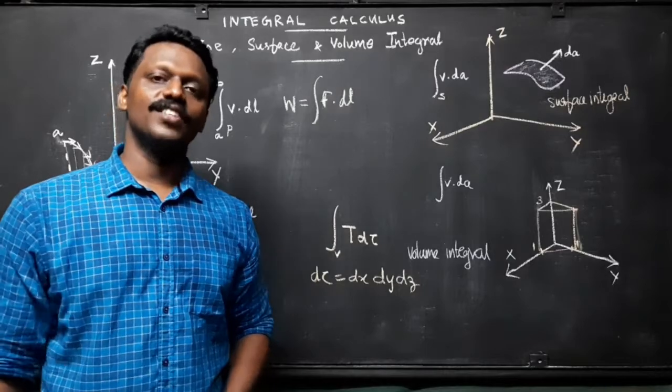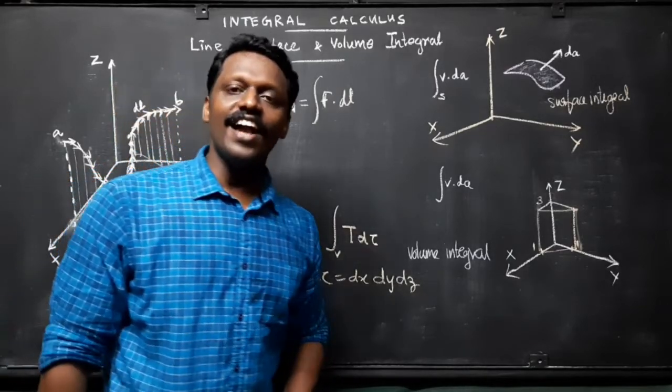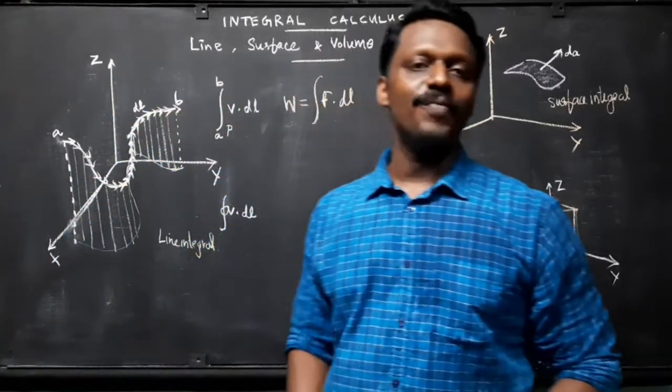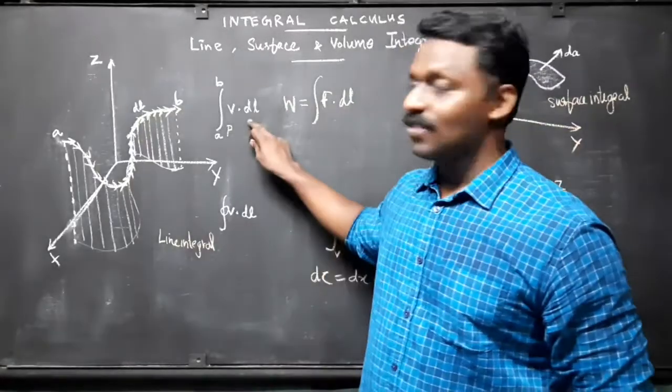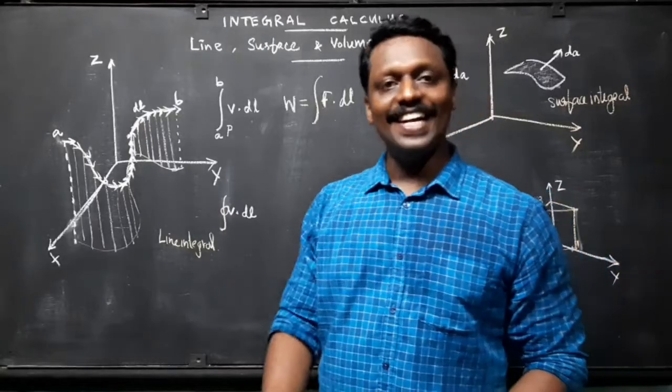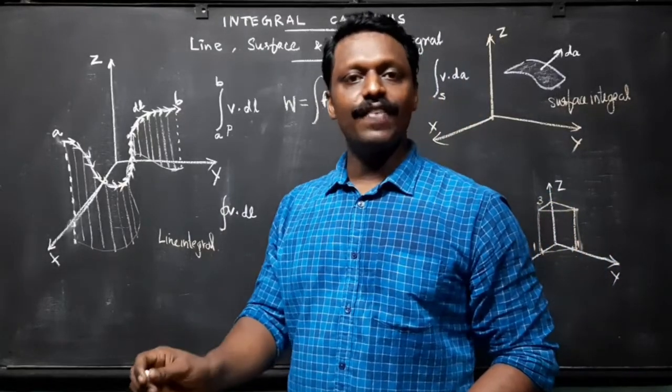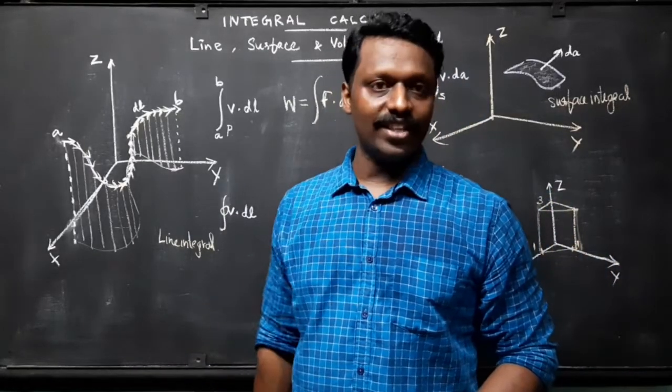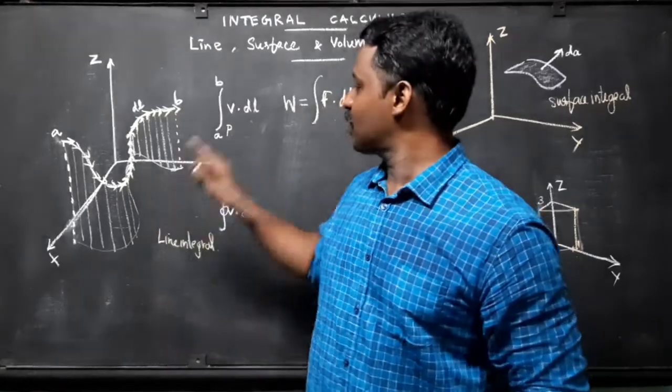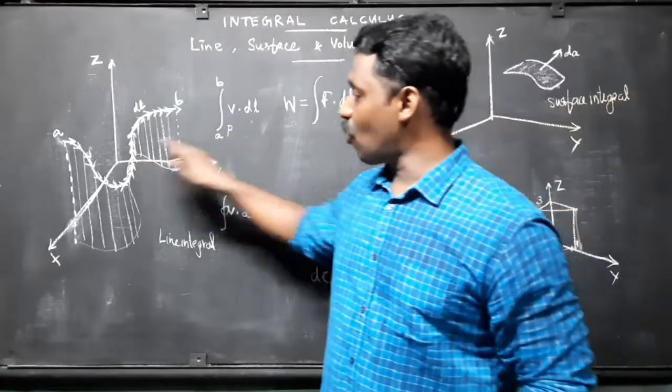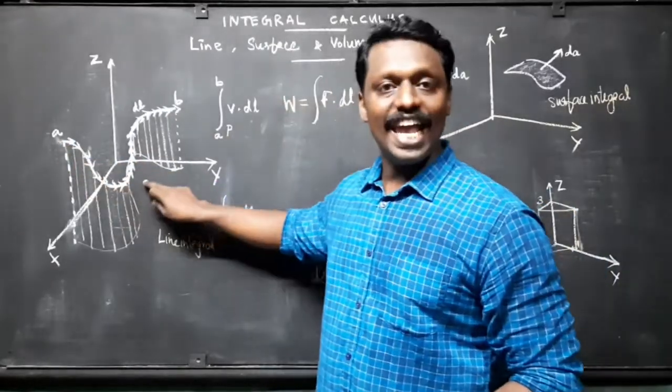First, we will discuss a line integral. A line integral is an expression of the form integral a to b v dot dl, where v is a vector function and dl is the infinitesimal displacement vector. The integral is to be carried out along a prescribed path p as shown in the figure, which is from a to b.